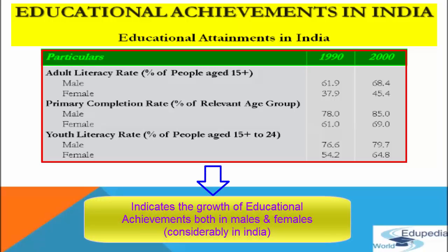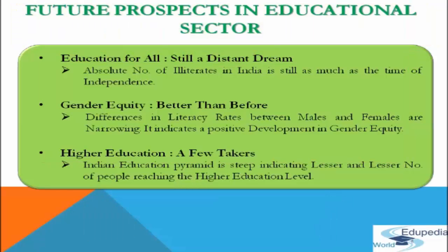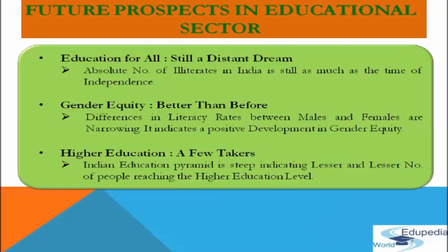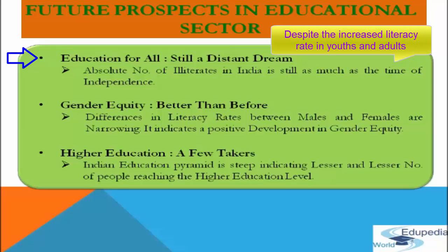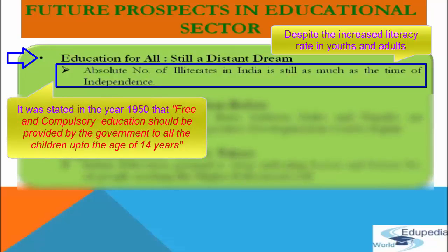Regarding future prospects in the educational sector: education for all remains a distant dream. While literacy rates for both adults and youth have increased, the absolute number of illiterates is still as large as India's entire population at the time of independence in 1950. The Directive Principles of the Constitution noted that the government should provide free and compulsory education for all children up to age 14.